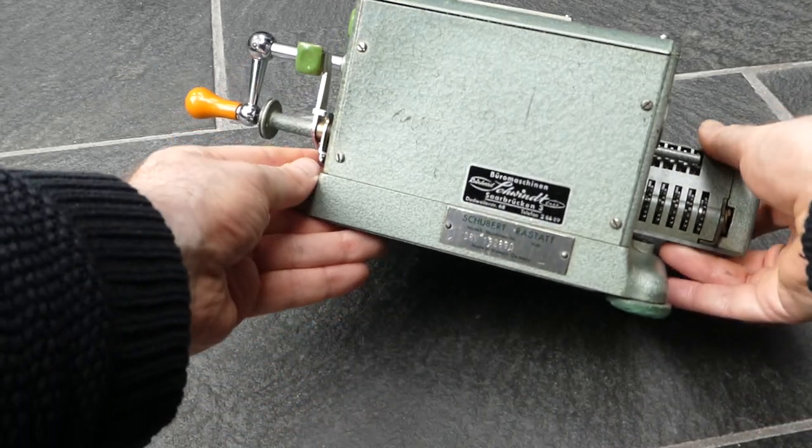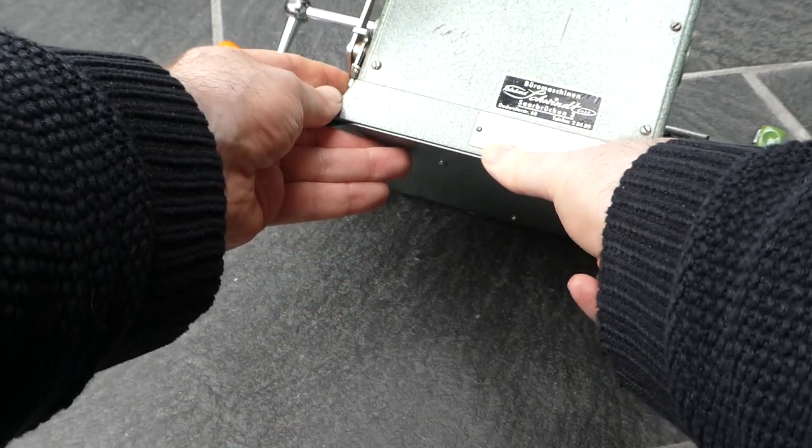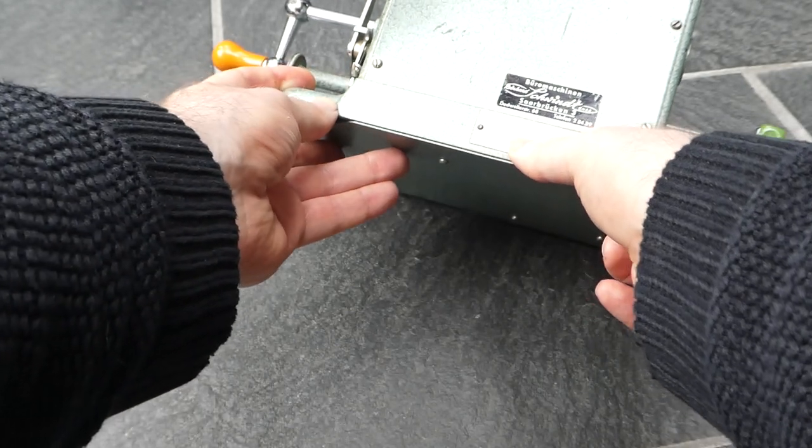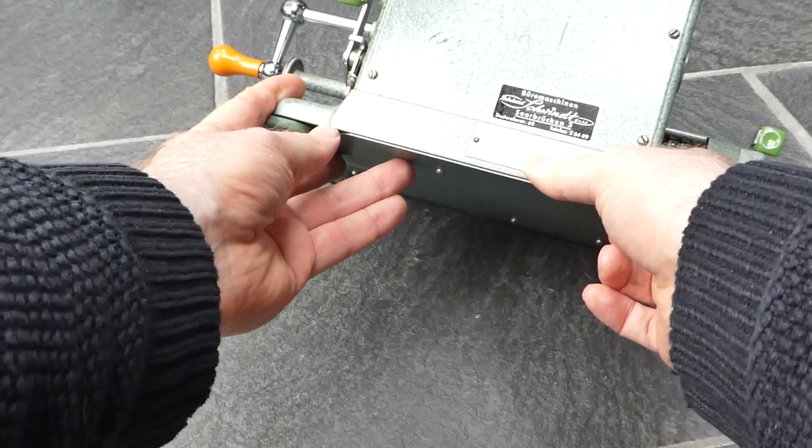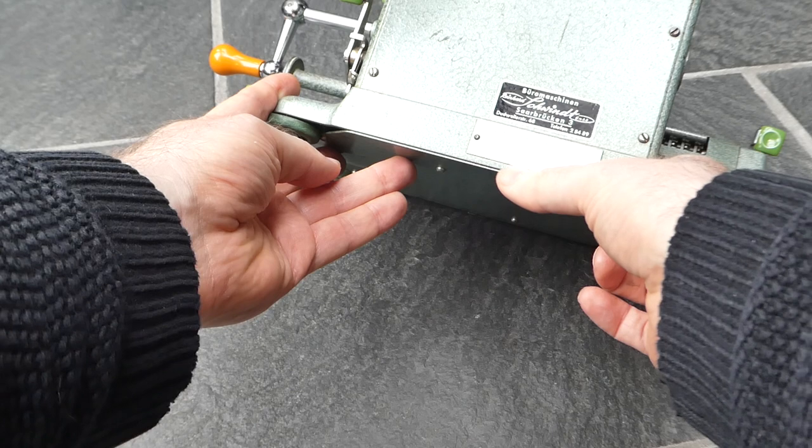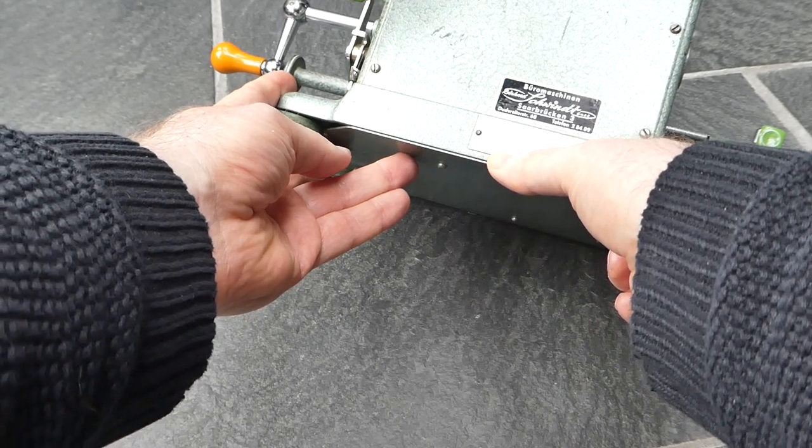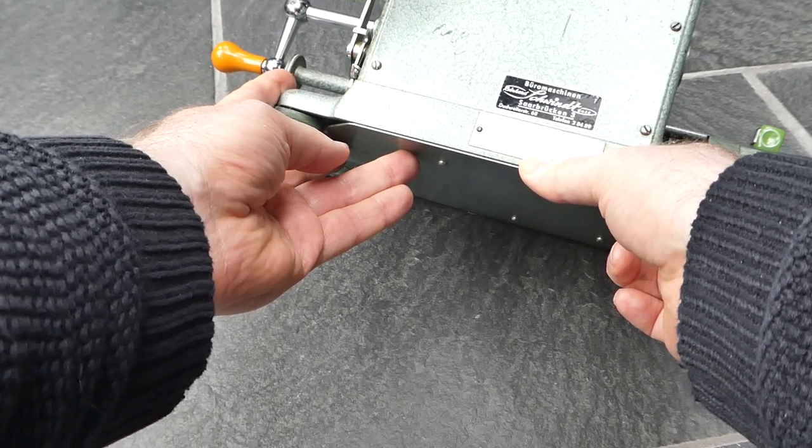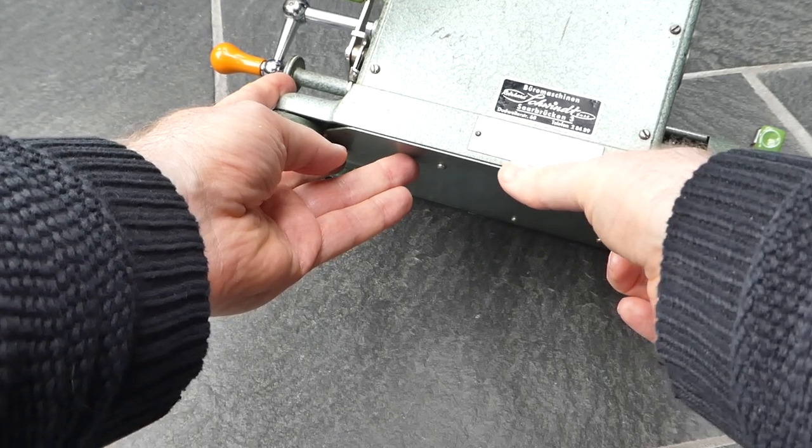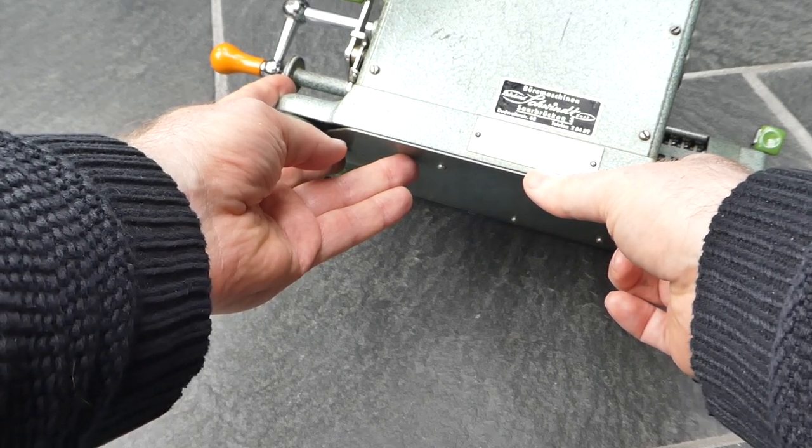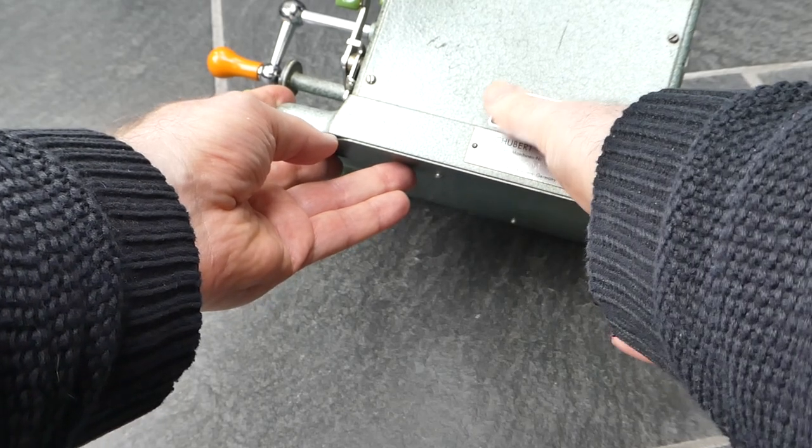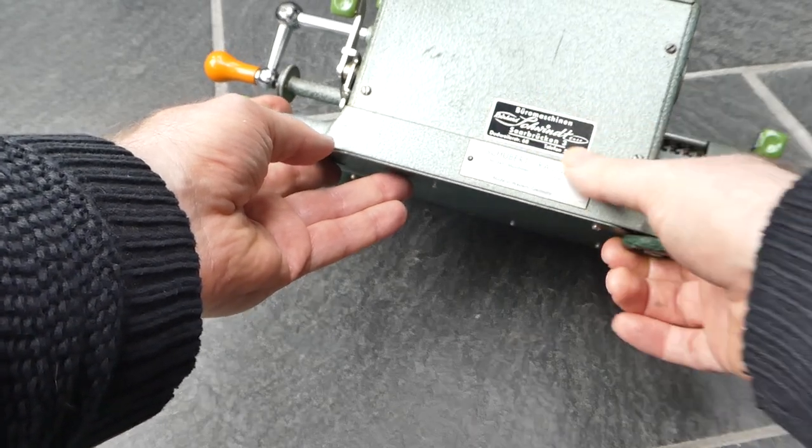On the back here we have the serial number. Schubert, which was based in Rastatt, the model DRV and the serial number 132890, made in Western Germany. This here is from the reseller, the office supply company.